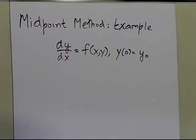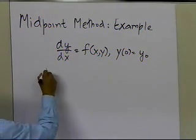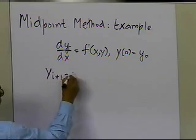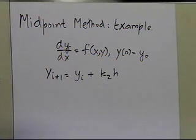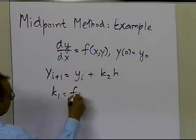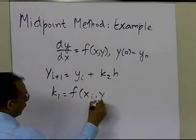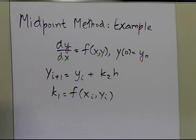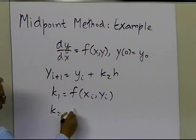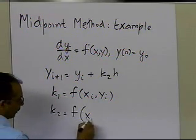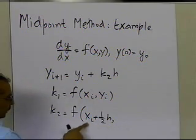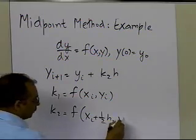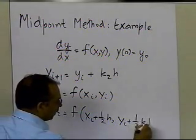The way the midpoint method works out — the numerical method — is y-sub-(i+1) equals y-sub-i plus k2 times h, where k1 is the value of the function at the point where you are, which is x-sub-i, y-sub-i, and k2 is the value of the function f at the midpoint — that's why it's called the midpoint method — because it's halfway between x-sub-i and x-sub-(i+1), evaluated at y-sub-i plus one-half k1*h.